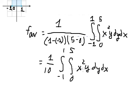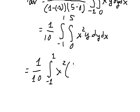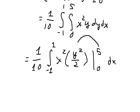Now integrating with respect to y, the integral of y gives y squared over two. We evaluate y squared over two with bounds from zero to five, keeping the x squared term. Substituting five and zero into the expression.